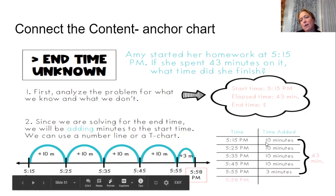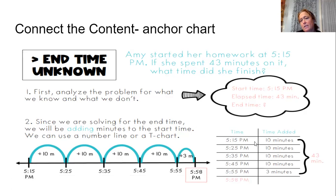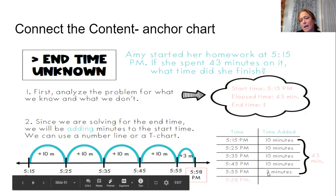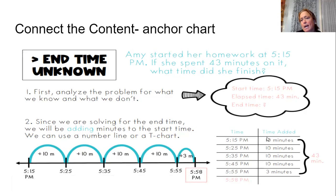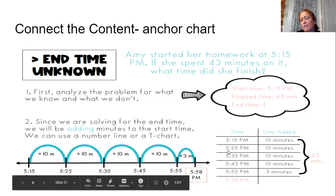So now we have talked about how to use a chart for this, where we have the beginning time on the left, and we have the number of minutes you're adding on the right. So 5:15, once we add 10 minutes would become 5:25. And we continue to do that until we have added the 43 minutes it took her to do her homework. And then our final time is listed at the bottom.